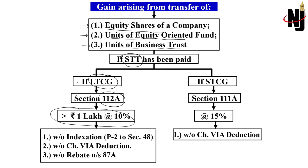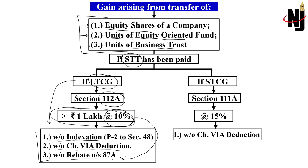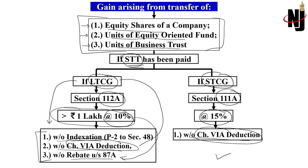The first 1 lakh under 112A will not be taxable, but LTCG is to be computed without claiming indexation benefit, without claiming Chapter VI-A deduction, and the tax computed at 10% will not be entitled to rebate under section 87A. From the same three assets, short-term capital gain under section 111A, if STT has been paid, will be taxable at 15%. Chapter VI-A reduction is not allowed for either 112A or 111A. The only difference is that rebate under 87A is allowable against tax under 111A but not under 112A.